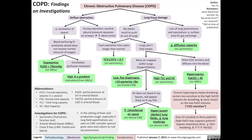In addition, because the lungs don't fully empty, more carbon dioxide remains in the lungs and diffuses into the blood. This results in hypercapnia, measured on arterial blood gases as a partial pressure of carbon dioxide greater than 45 mmHg. Chronic hypercapnia makes breathing centers less sensitive to the high CO2 stimulus for breathing and more reliant on the low oxygen stimulus. Since patients are now more tolerant to high carbon dioxide levels, they are described as carbon dioxide retainers, and this phenomenon is known as CO2 retention.